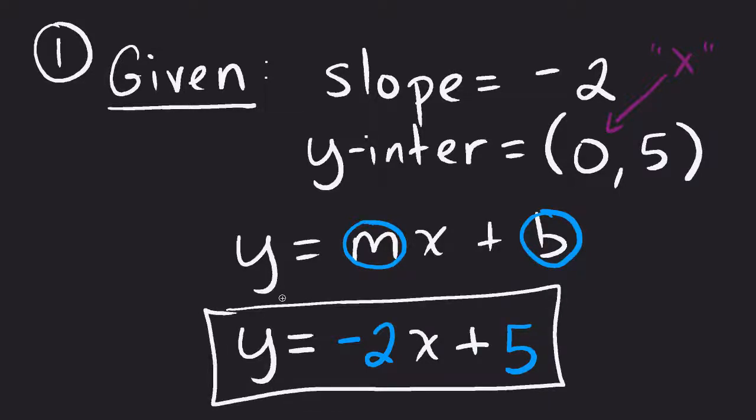That's it for slope-intercept form. Let's look at a slightly different version of how this problem could be given. Let's say they gave us the problem in point-slope form.